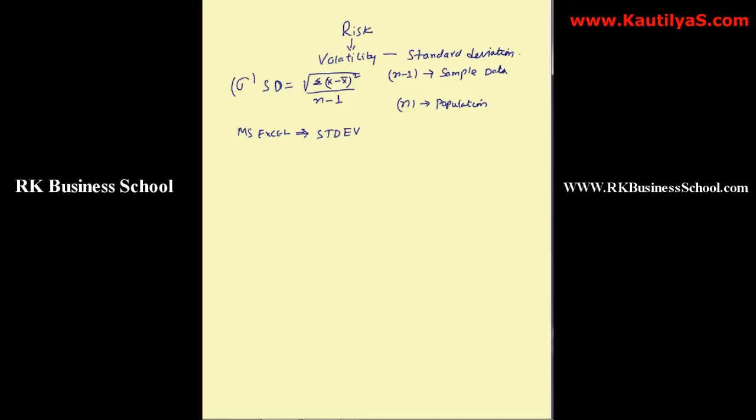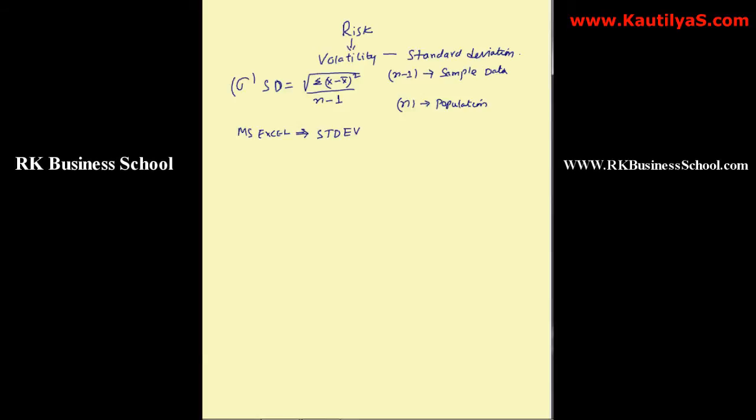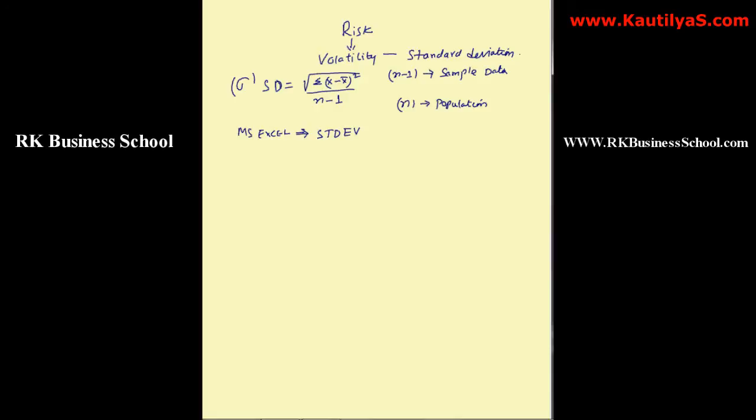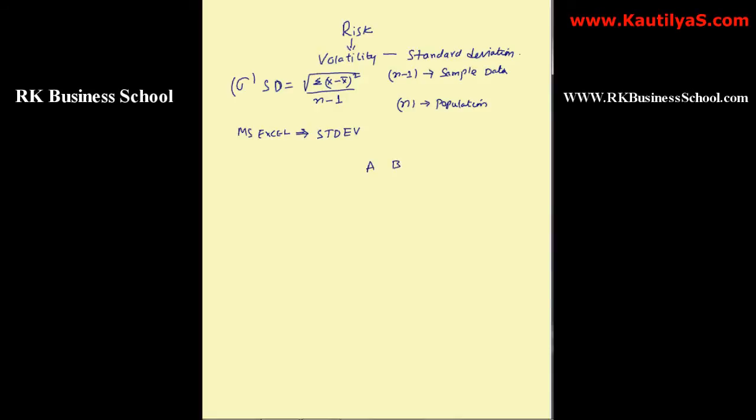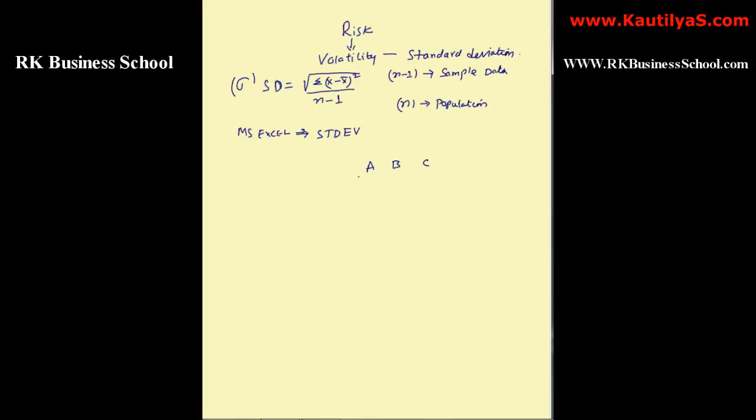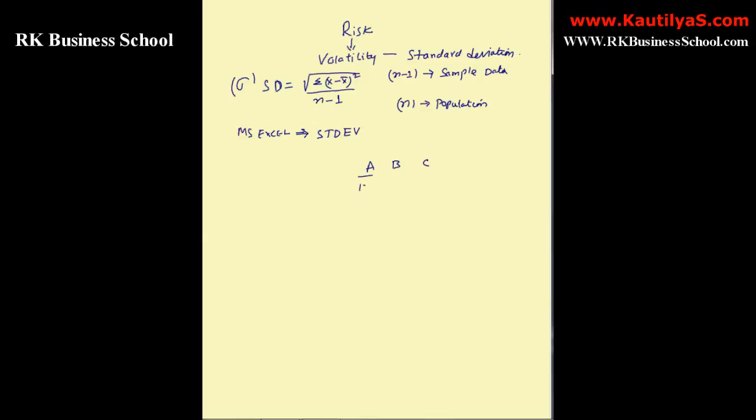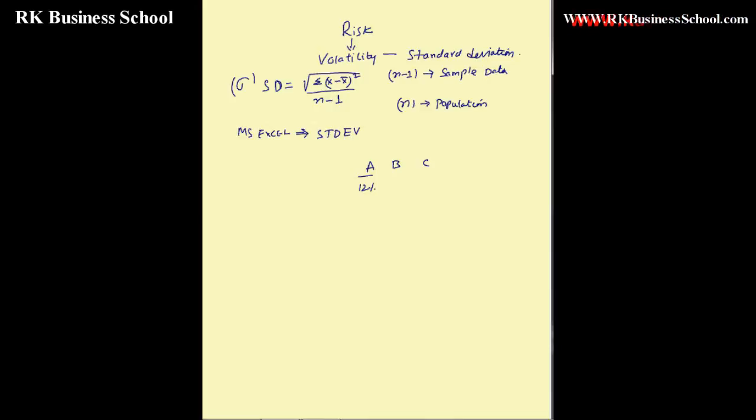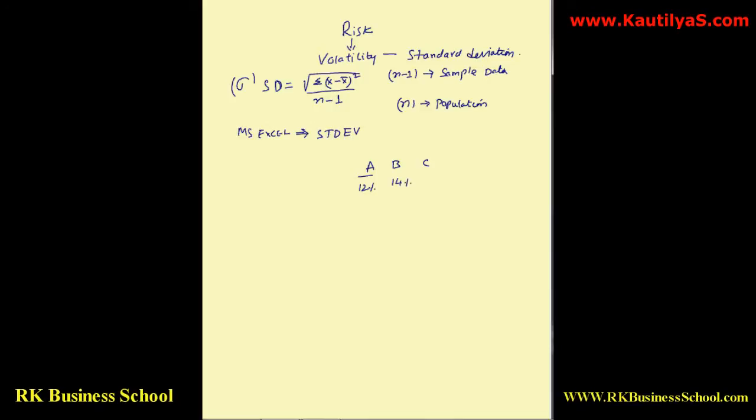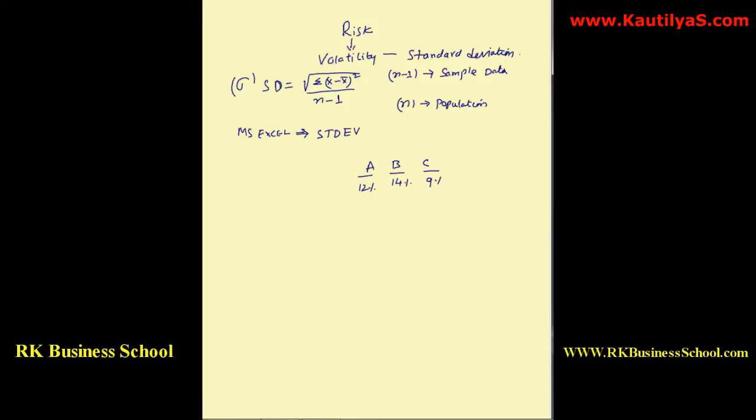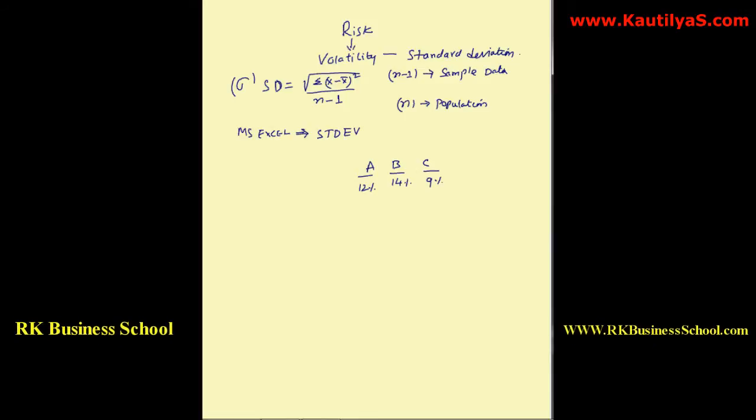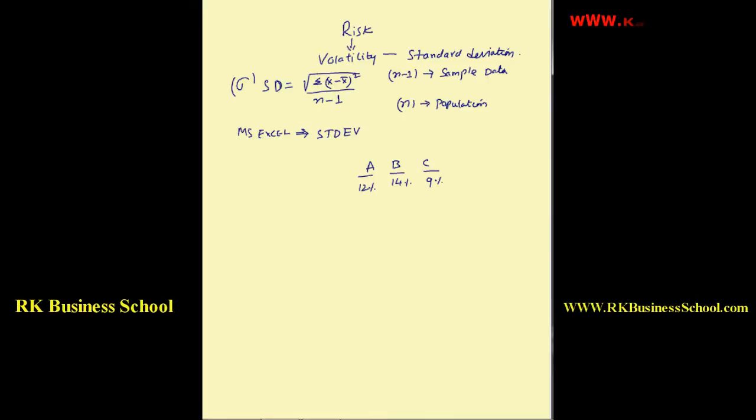How do we interpret STDEV? Suppose we have three stocks A, B, and C. A has got a standard deviation of 12 percent, B has got a standard deviation of 14 percent, and C has got a standard deviation of 9 percent.